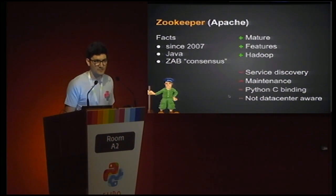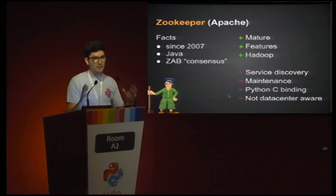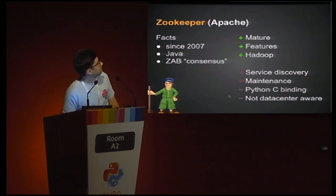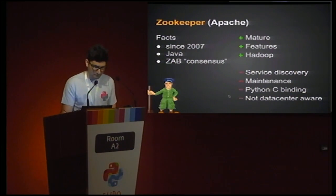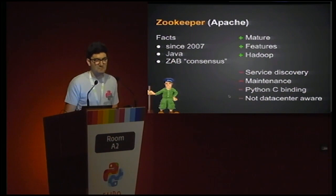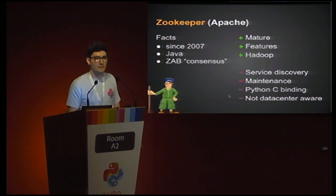ZooKeeper's main design — shared with ETCD — is that you can compare it to a distributed hierarchical file system, which is also comparable to a key-value store. It's written in Java and uses a special consensus algorithm to ensure all nodes of the ZooKeeper cluster agree. The Python C bindings are not really usable, and it's not a data center-aware technology — it just knows about its own cluster.